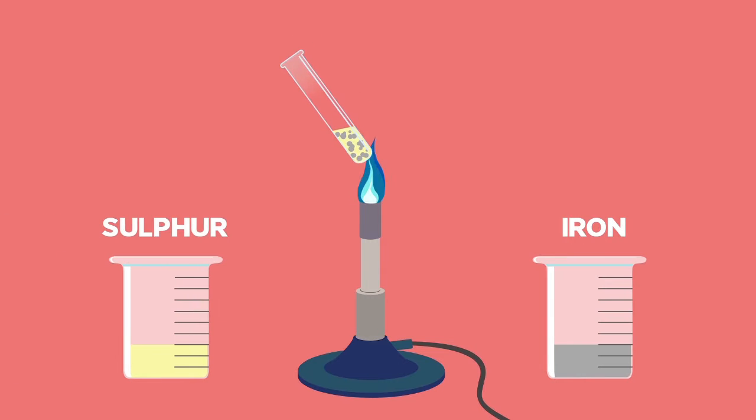For example, when iron and sulphur are heated in a test tube to form iron sulphide. The colour change gives us a clue that a chemical reaction has taken place.